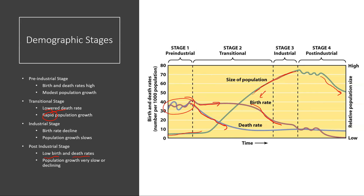You want to be able to recognize how birth and death rates change in each of those stages, and what we would expect in terms of the rate of change in that population over time. When would we expect rapid expansion? When would we expect slow growth? When would we expect a stable or declining population? What stage are we in, and what are the implications in terms of birth and death rates? That is it.